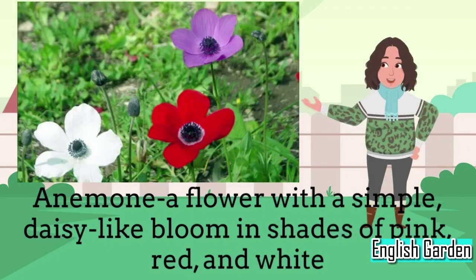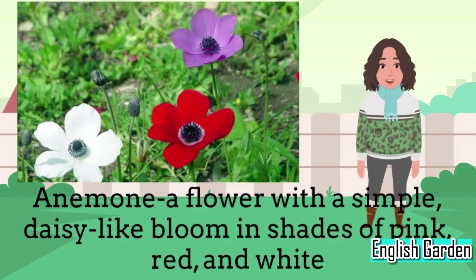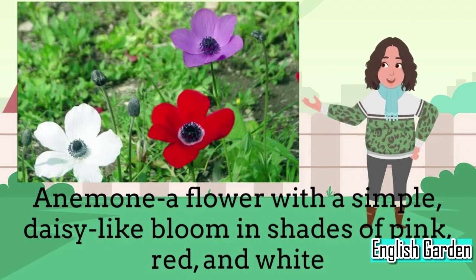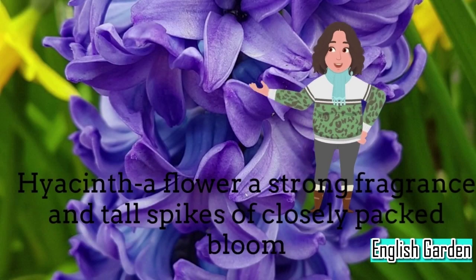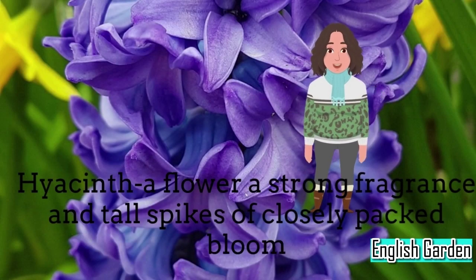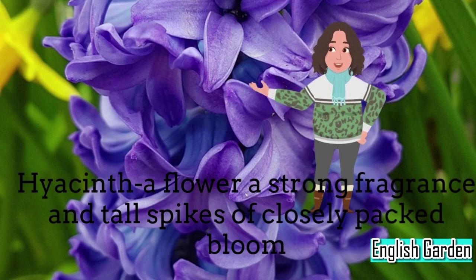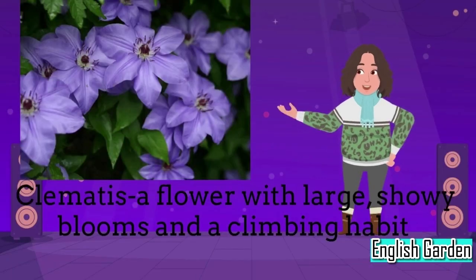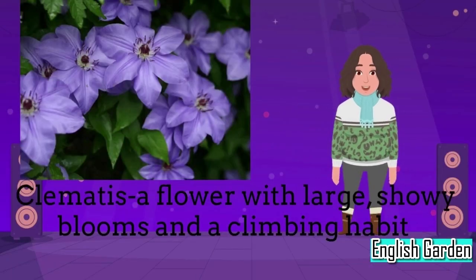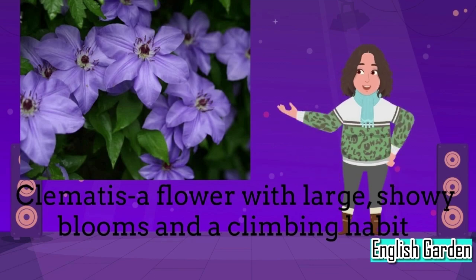Anemone: a flower with a simple, daisy-like bloom in shades of pink, red, and white. Hyacinth: a flower with a strong fragrance and tall spikes of closely packed blooms. Clematis: a flower with large, showy blooms and a climbing habit.